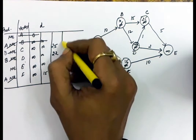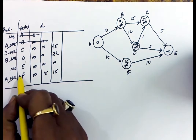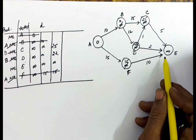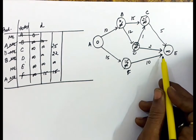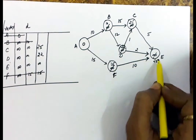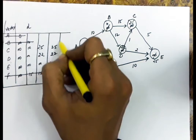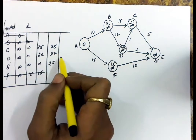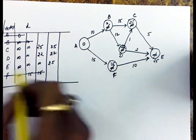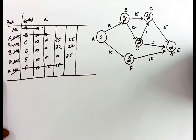The remaining distances are 25, 22, infinite, and 15. Out of these, 15 is the smallest, so we delete F. The connection from F is F to E with distance 10: 15 plus 10 = 25, so the distance of E is set as 25. E has been explored from F, so the predecessor of E is set to F.